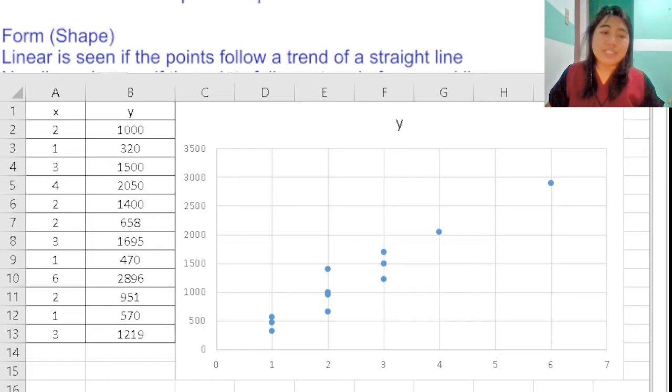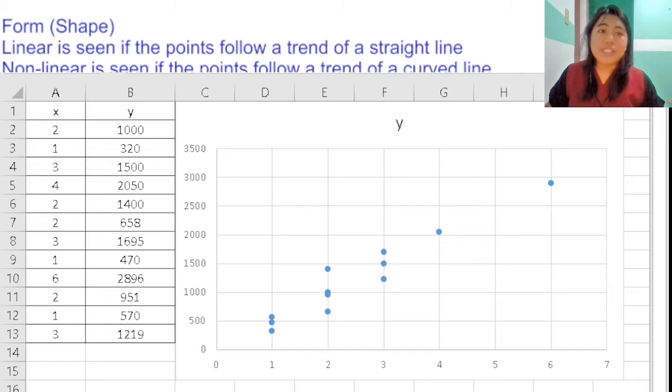The scatterplot is described by three things: form, trend, and variation. Form can also be considered the shape, which could be either linear or non-linear. Linear shows a straight line trend, and non-linear shows a curved line as the trend.